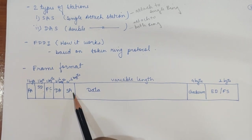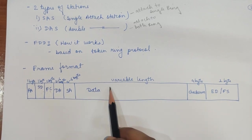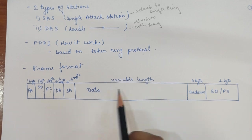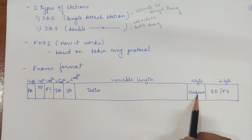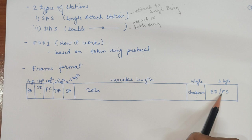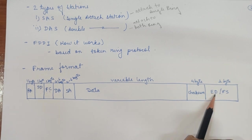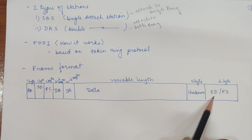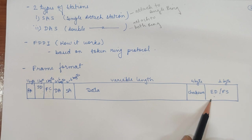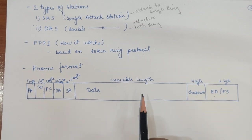The Source Address field contains the address of the sender. Next is a variable-length field that contains the actual information or data. After that is the Checksum field, which is used for error correction and discarding damaged frames. The last field is the End Delimiter combined with Frame Status — it defines the end of the frame.